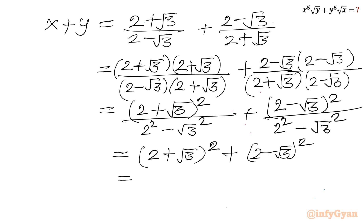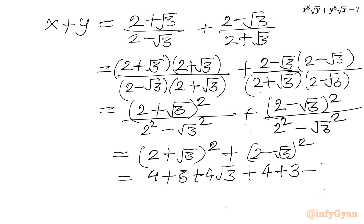Now a squared plus b squared. I can expand: 4 plus 3 plus 4 root 3 plus 4 plus 3 minus 4 root 3. We can cancel the 4 root 3 terms. 7 plus 7 is 14. So x plus y is 14.